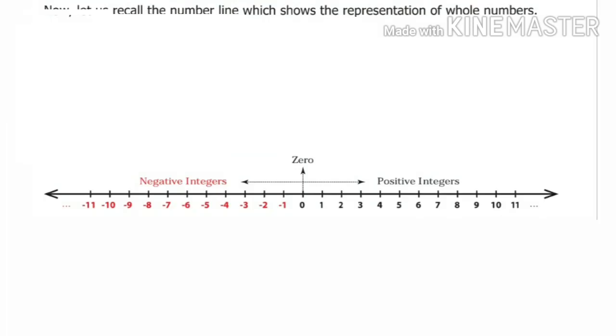See the number line. Zero's left side has negative integers or negative numbers. Zero's right side has positive integers or positive numbers. For example, negative 1, 0, 1, 2, 3. This is the number line of integers.